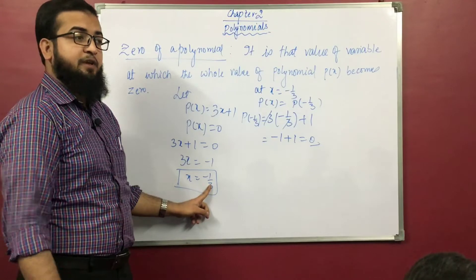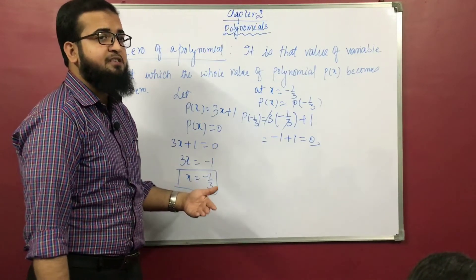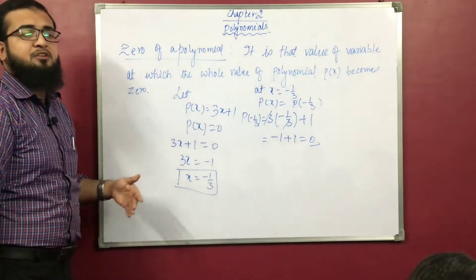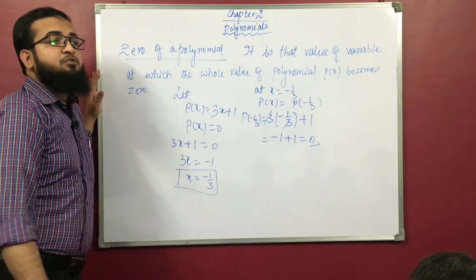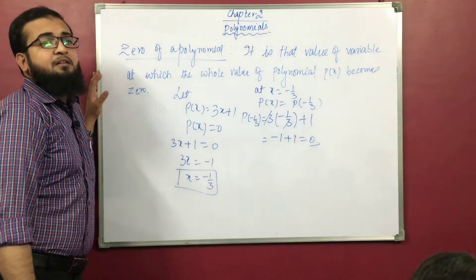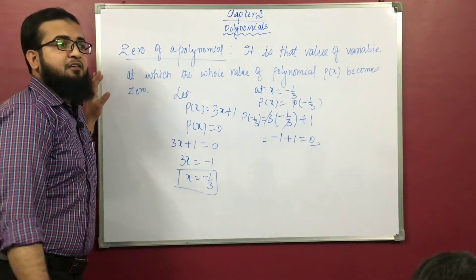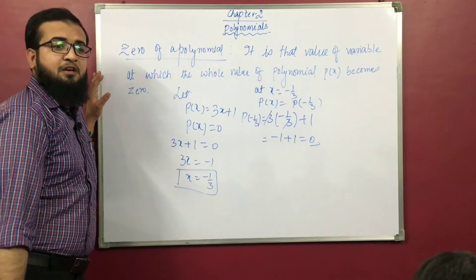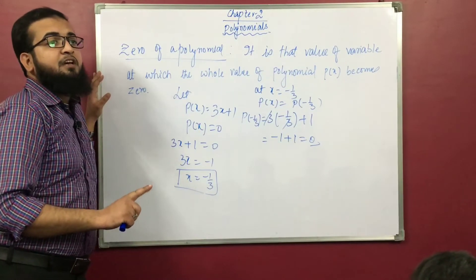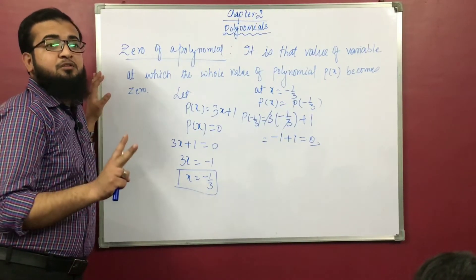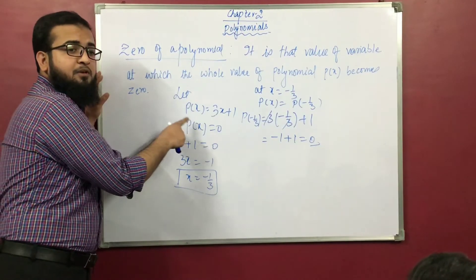There is only one possible value at which the zero occurs. To know how many possible values exist at which the whole polynomial becomes 0, we look at the degree. We have to see the degree of the polynomial — whether the degree is 1, 2, or 3. If the degree is 1, then there is only one zero possible of the polynomial. If the degree is 2, then two such values are possible.